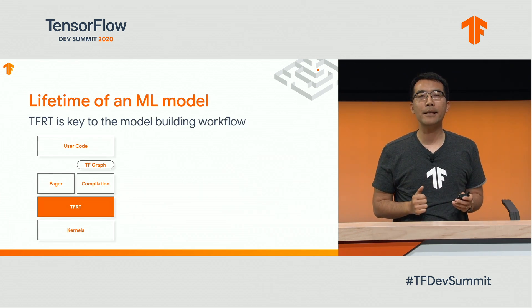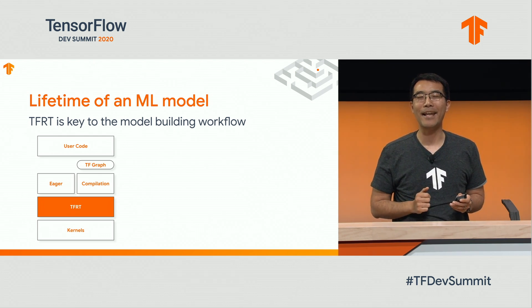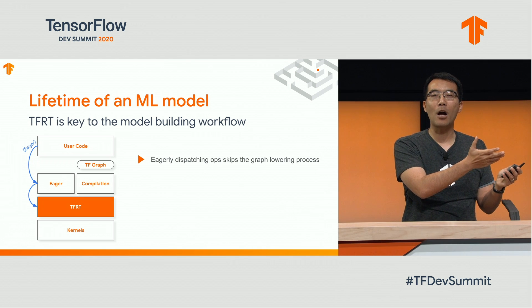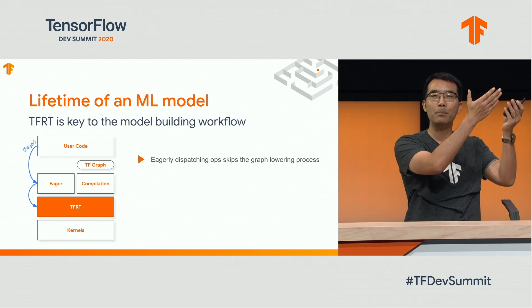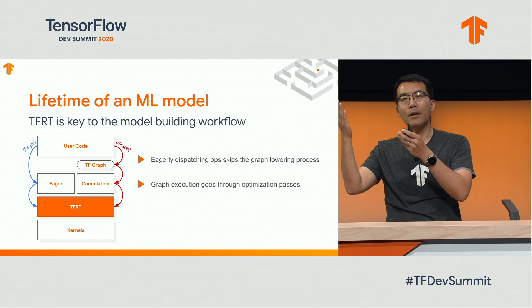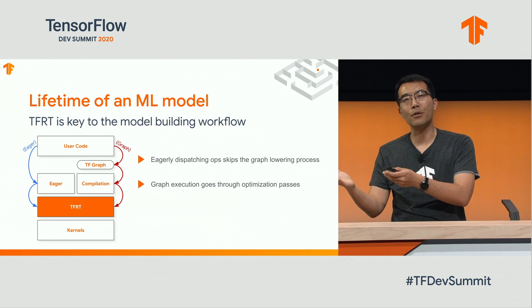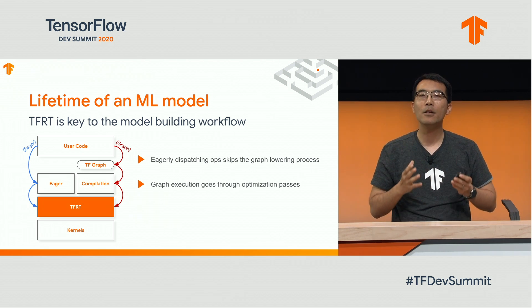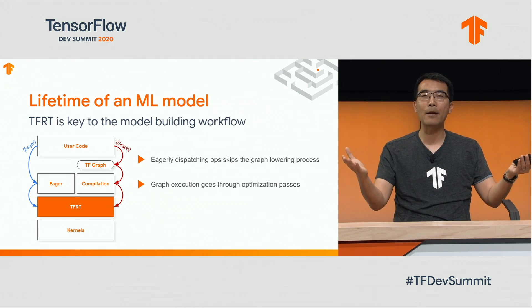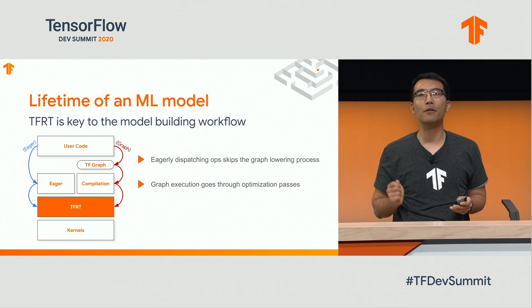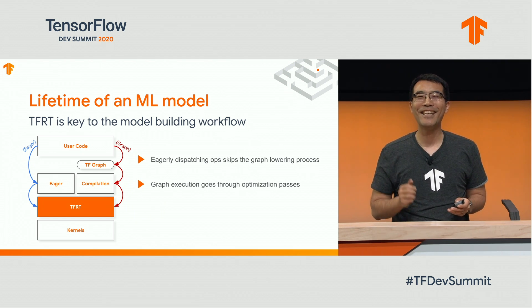So how does TFRT fit into the workflow of an ML model? Here, we see the TF training stack again. Through TensorFlow APIs, your program can either eagerly dispatch ops to the runtime, as you can see from the blue arrows on the left side of the diagram. Or as the red arrows on the right side show, in the case of graph execution, your program first generates a computational graph, which gets lowered to the optimized target-specific program and then dispatched to the runtime. The optimization and lowering work uses the MLIR compiler framework, which Jack just spoke about in his MLIR talk.